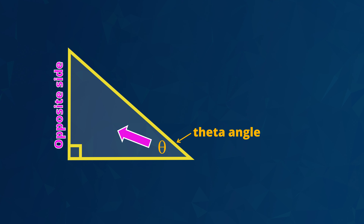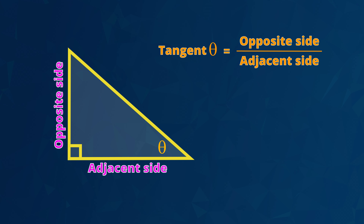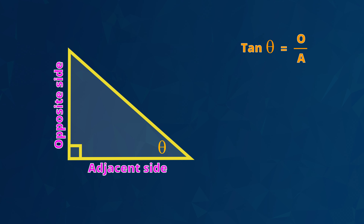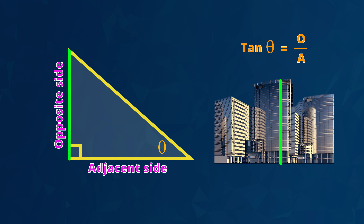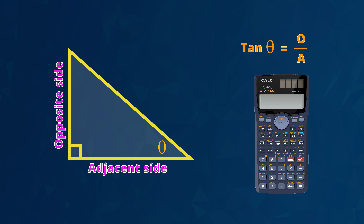Now let's see the tangent rule. In this right angle triangle, here is the right angle. Opposite the right angle is the longer side called the hypotenuse. This angle here is marked with the Greek letter called theta. Opposite the theta angle is a side called the opposite side. Next to the theta angle is a side called the adjacent side. The rule is that the tangent of an angle marked theta equals the length of the opposite side divided by the length of the adjacent side. In short, we say tan theta equals O divided by A.